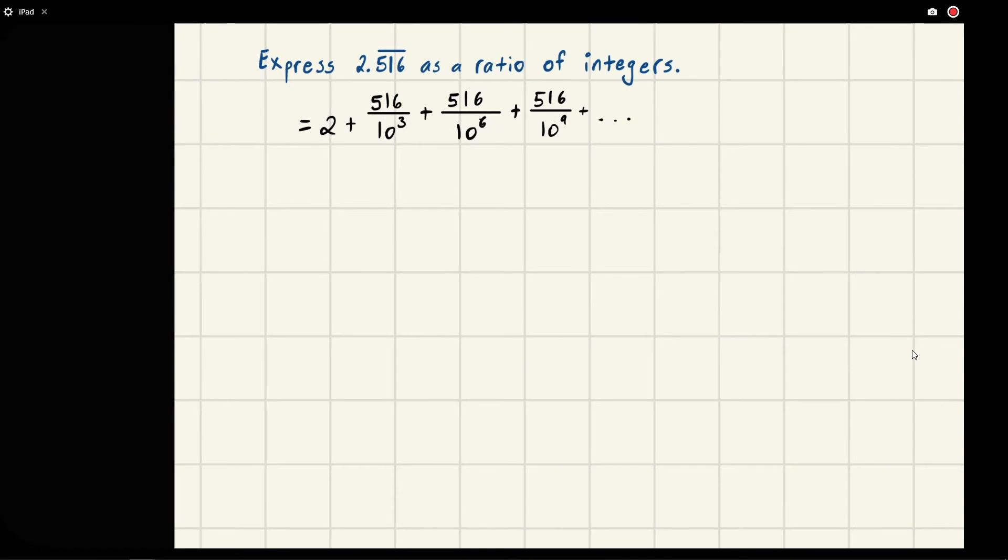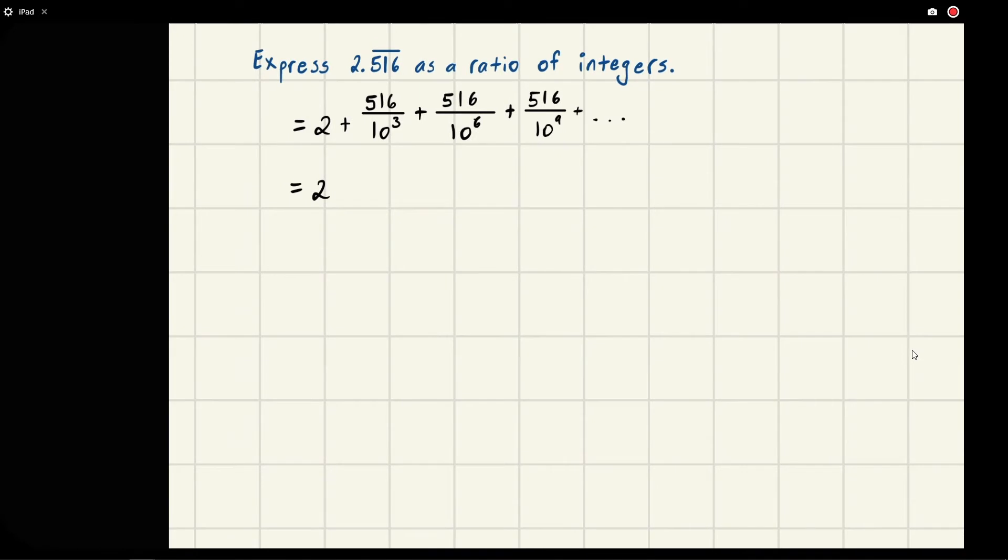From here, we'll rewrite this, keeping the 2 at the front. For this bit, we notice that it increases by 10 to the 3 every time. This is a geometric series with first term a and common ratio r being 1 over 10 to the 3.